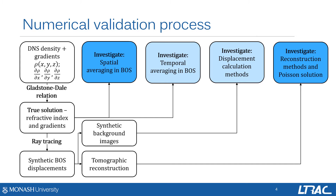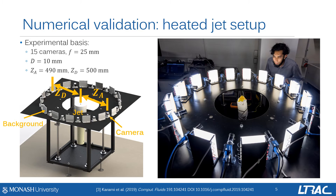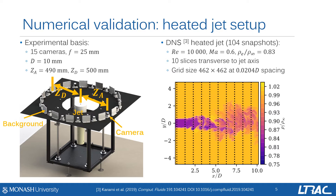Our validation procedure starts with the density field of a heated jet and its gradients obtained through direct numerical simulation. Using a ray tracing procedure, the synthetic background displacements are generated for our virtual camera setup. We can test each part of the TBOS process with this method, and today I will be presenting results focusing on the quality of the reconstruction methods and the impact of defocus blurring, which is the kind of spatial averaging inherent in almost all TBOS setups. The virtual camera setup is based on our 15-camera experimental rig in the L-TRAC facilities, with cameras positioned circumferentially around a heated jet. The simulation has a Reynolds number of 10,000 and a density ratio of 0.83, and we examine TBOS measurements at 10 downstream positions.